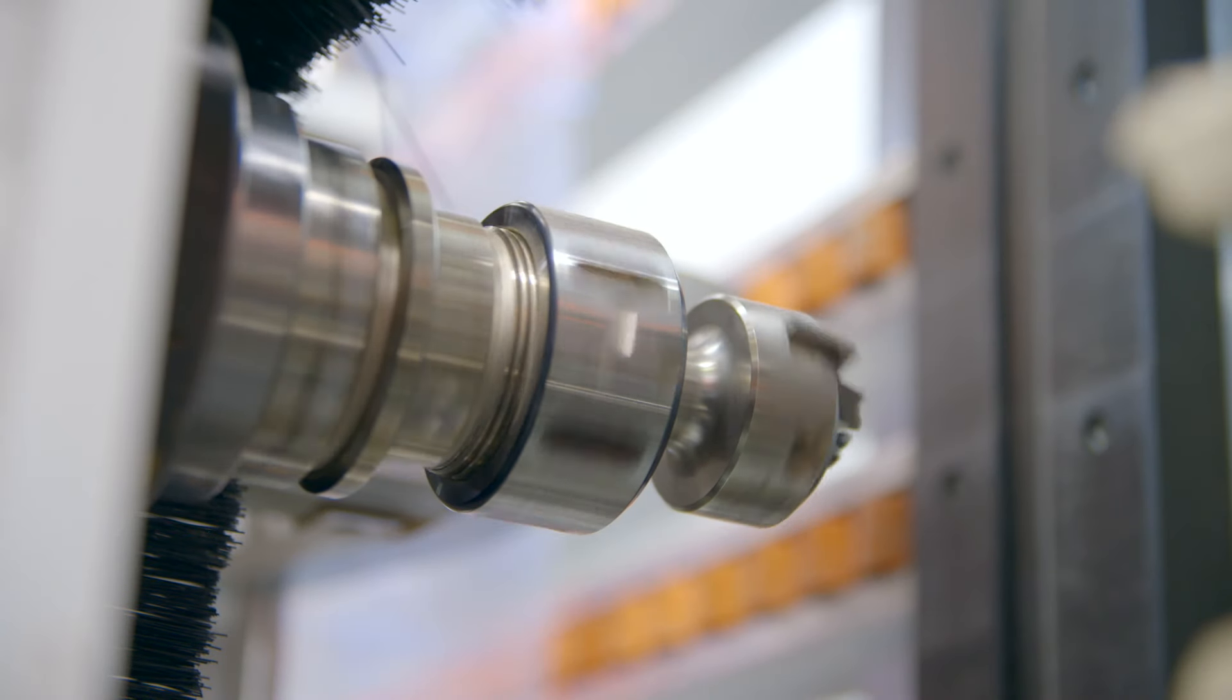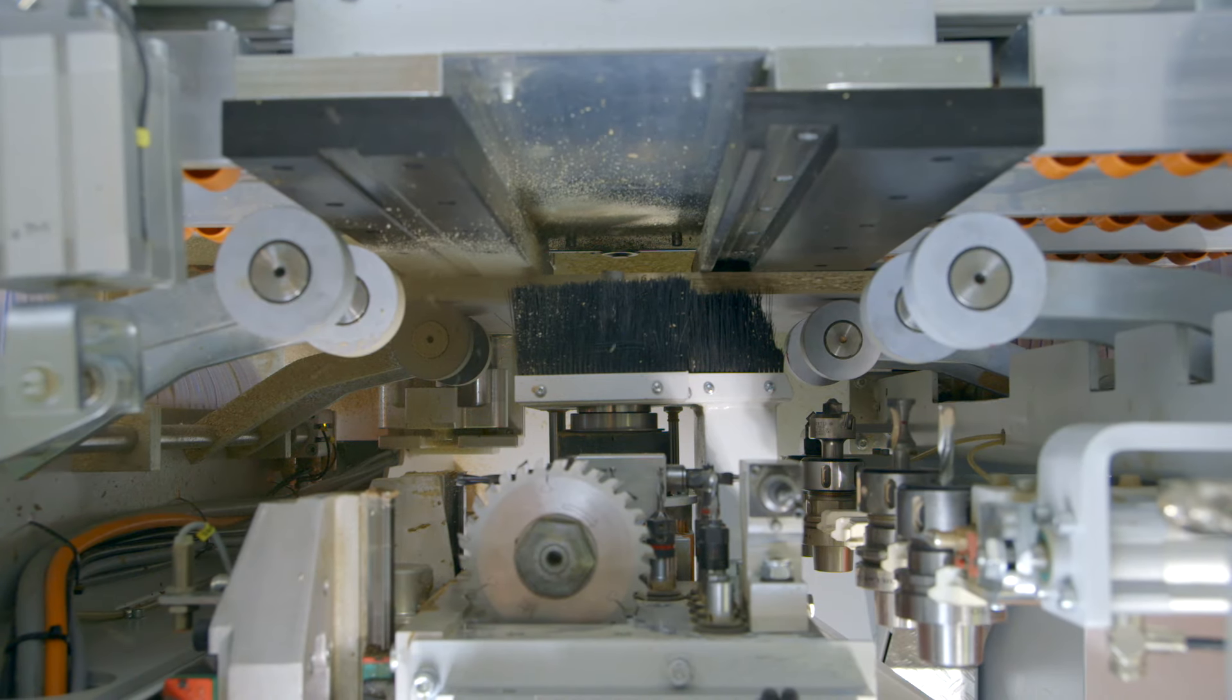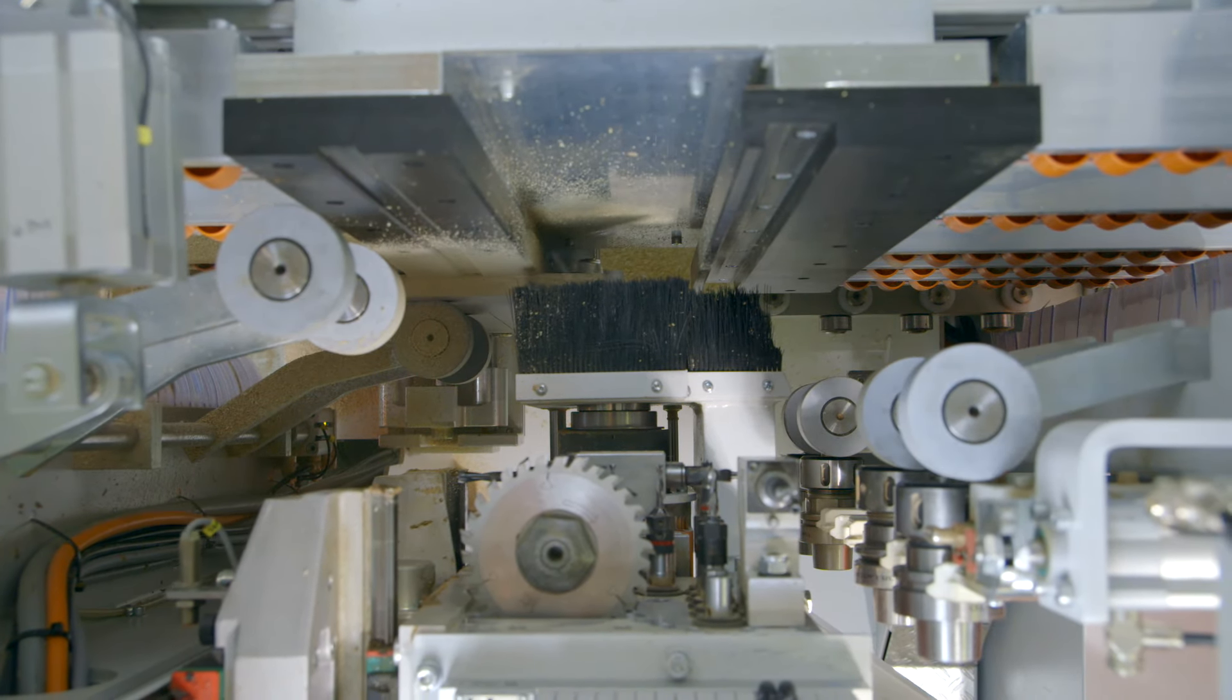The heavy-duty 5.6 kilowatt spindle offers a tool diameter capacity of up to 80 millimeters diameter and is also ideal for edge profile machining.